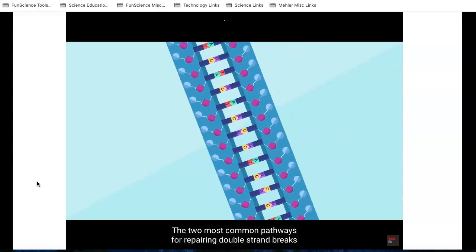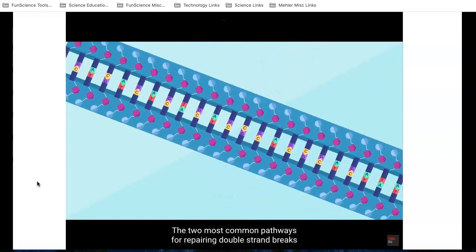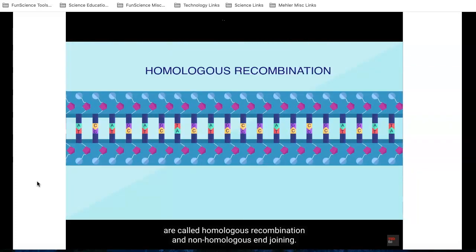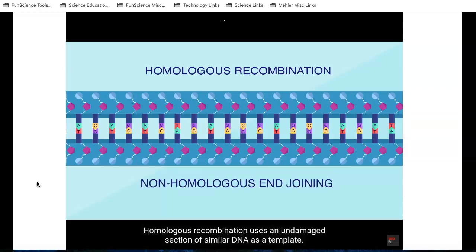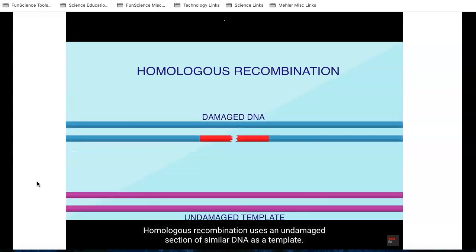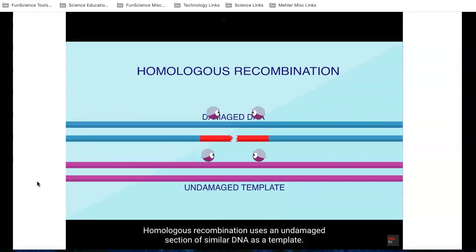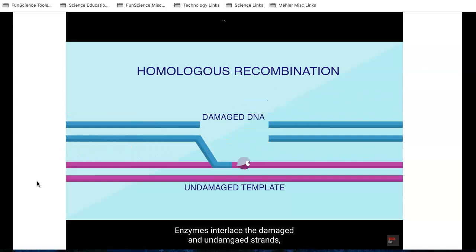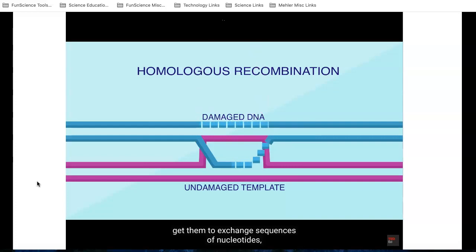The two most common pathways for repairing double strand breaks are called homologous recombination and non-homologous end joining. Homologous recombination uses an undamaged section of similar DNA as a template. Enzymes interlace the damaged and undamaged strands, get them to exchange sequences of nucleotides, and finally fill in the missing gaps to end up with two complete double-stranded segments.